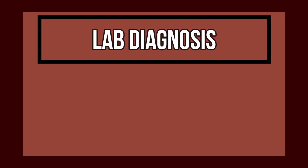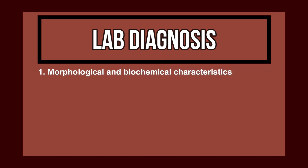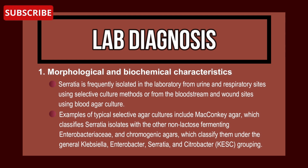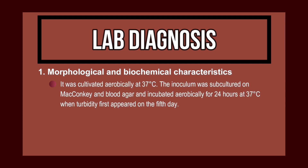Lab diagnosis of Serratia marcescens: number one, morphological and biochemical characteristics. Serratia is frequently isolated in the laboratory from urine and respiratory sites using selective culture methods, or from the bloodstream or wound sites using blood culture. Typical selective agars include MacConkey agar, which classifies Serratia isolates with other late lactose-fermenting Enterobacteriaceae, and chromogenic agars under the Klebsiella-Enterobacter-Serratia grouping. Cultures are grown aerobically at 37°C for 24 hours.